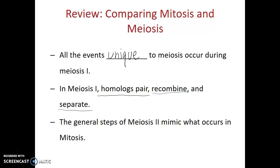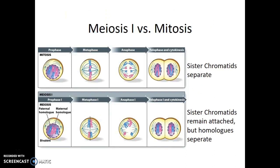The general steps of meiosis II mimic what occurs in mitosis. The only difference is that in meiosis II, we're starting with cells that are haploid, whereas in mitosis, we're typically starting with cells that are diploid. So when looking at mitosis compared to meiosis I,